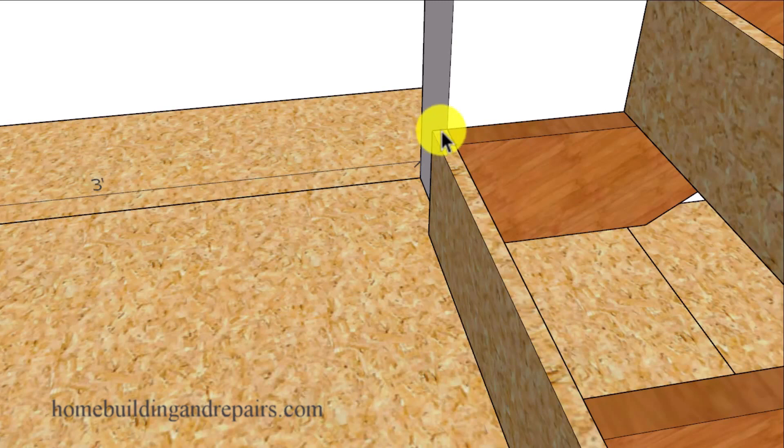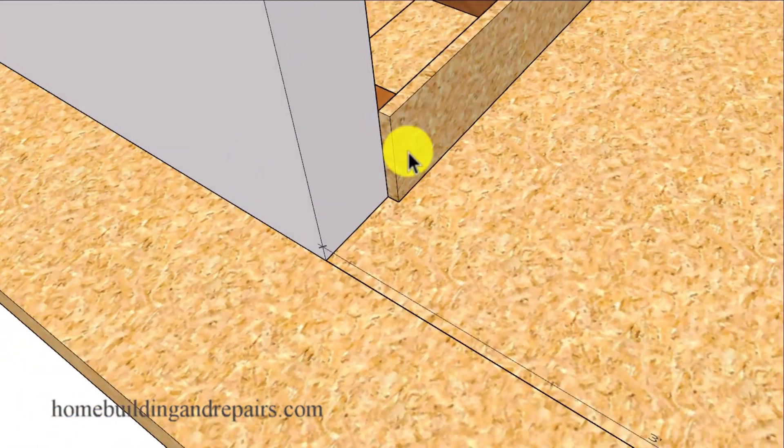Now this isn't always going to happen if you bring the edge of the stringer to the end of the wall framing and then attach a three-quarter inch riser to the stairway and a half inch piece of drywall or even a five-eighths piece of drywall. Then you can see where something like this might not be that big of a deal.